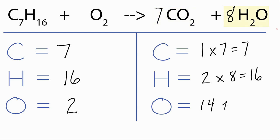And then the water, we have eight times one, that's eight there, for a total of 22 oxygen atoms on the products. So now we have 22 oxygens and only two here on the reactant side. If we multiply two times 11, that gives us 22.